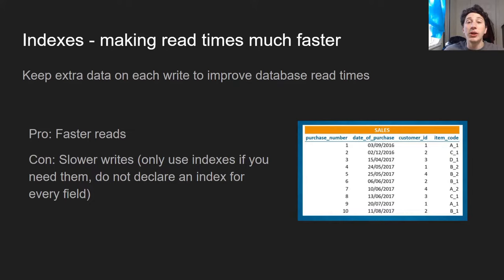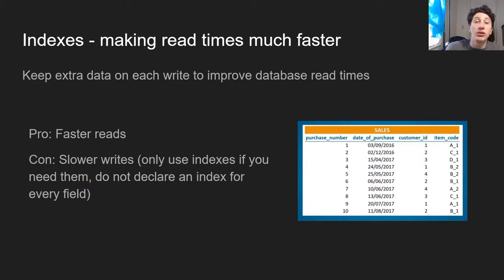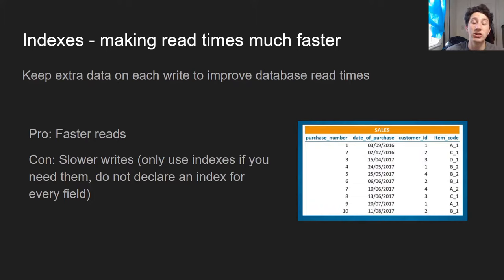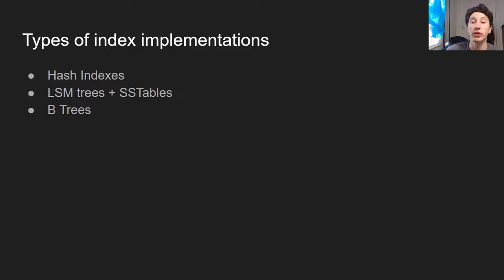Writing can be solved by using an append-only log, but reading is the bigger issue because many applications are very read-heavy. To make reads faster, we use indexes, which keep extra pieces of metadata on every single write to help track which values of certain rows are the same, so you can query them quickly. For example, if you want all rows with customer ID 2, you can find them without a linear scan. The downside is that if you index every column, writes become very slow.